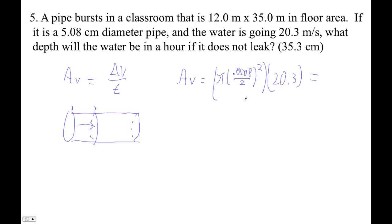Alright, here we go. Pi times 0.508 divided by 2 squared times 20.3. So that is an impressive 0.04114, and that's cubic meters per second. And remember, cubic meters is a huge amount. So that's actually 41 liters per second. That's a fair amount coming in there.